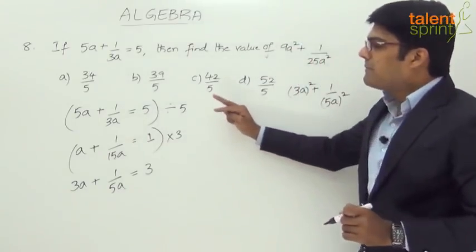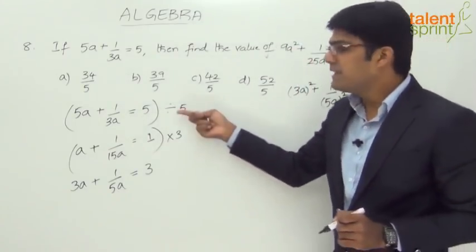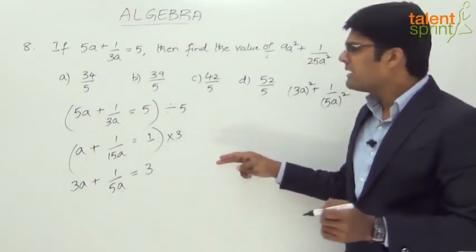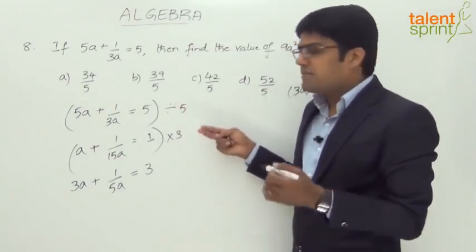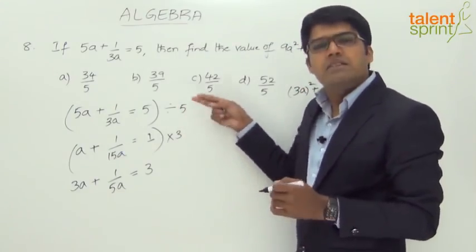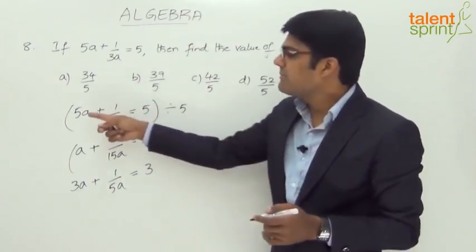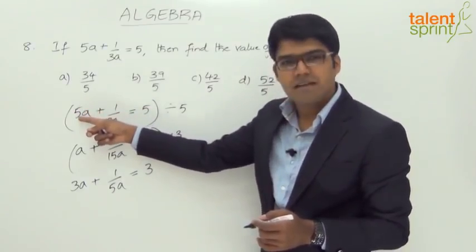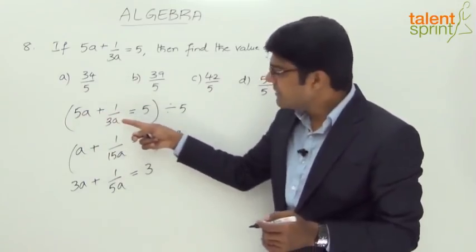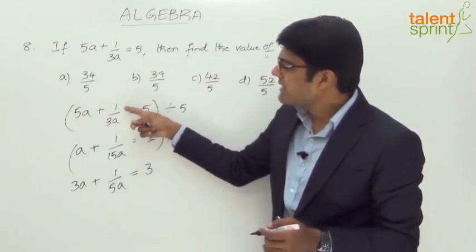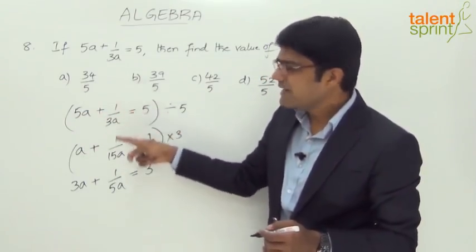So basically we have multiplied the equation with 3 and divided by 5. So that's like, you know, either you take it in two steps or you simply say that you multiply the equation with 3 by 5, a fraction. So multiply by 3 by 5. So this becomes 5a into 3 by 5, 3a, and multiply this by 3 by 5. So 1 by 3 into 3 by 5. 3 and 3 gets cancelled. We get 1 by 5a.